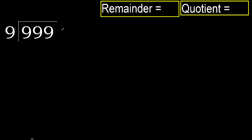999 divided by 9. 9 is not less, therefore start with 9. 9 multiplied by which number is nearest to 9, but not greater?